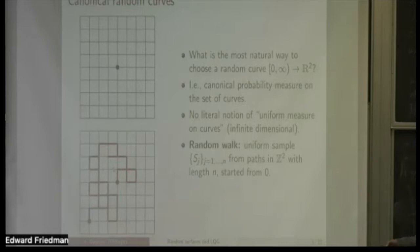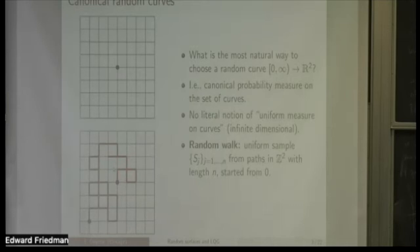We allow any possible paths here, so they're allowed to cross themselves, visiting the same vertex or edge more than once. There are only finitely many possible paths in the grid for any number n. So we can just pick one of these n-step paths in the grid uniformly at random, so that each possible path is assigned equal probability. The object we get — this random path in the grid — is called the random walk.